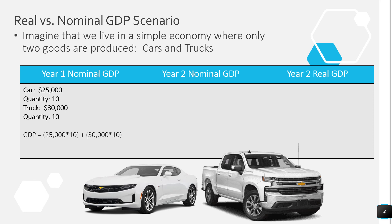So it's pretty easy to calculate our nominal GDP for year one. The GDP would be the quantity of cars times the price — so 25,000 times 10 — plus the quantity of trucks, which is 10, times the price of 30,000. If you pause the video, how much was our GDP in year one? That's right — the GDP was equal to $550,000. 25,000 times 10 is $250,000, plus 30,000 times 10, which is $300,000. Add those two together and you get $550,000 — that's how much we produced.